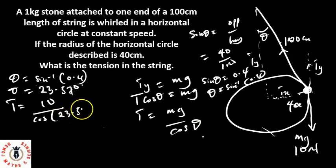That's the cos of 23.578. So that T, which is the tension in the string, is equal to 10 over the cos of 23.58, equals 0.9165. Now let's divide 10 divided by 0.9165.